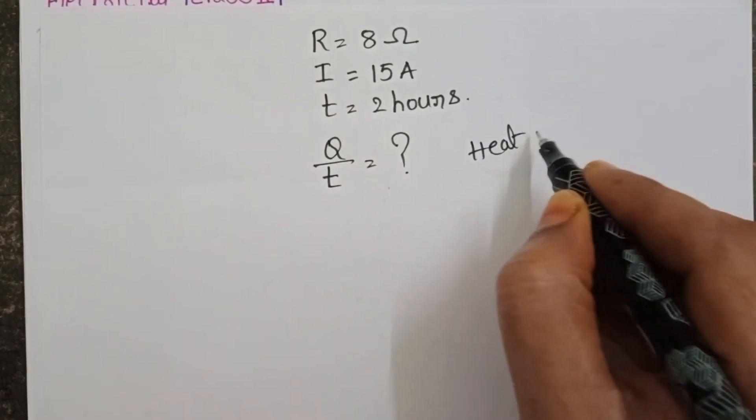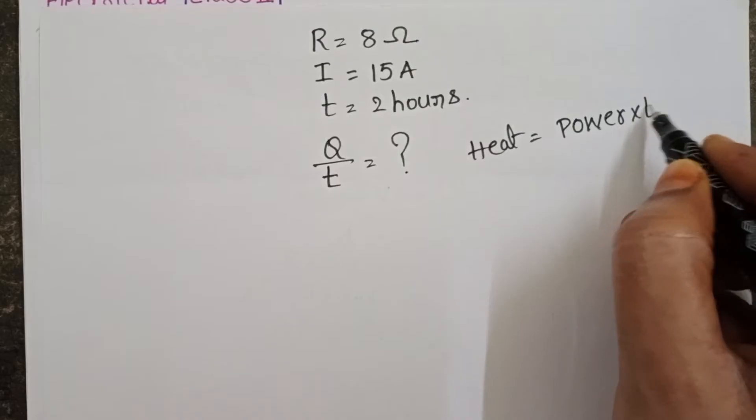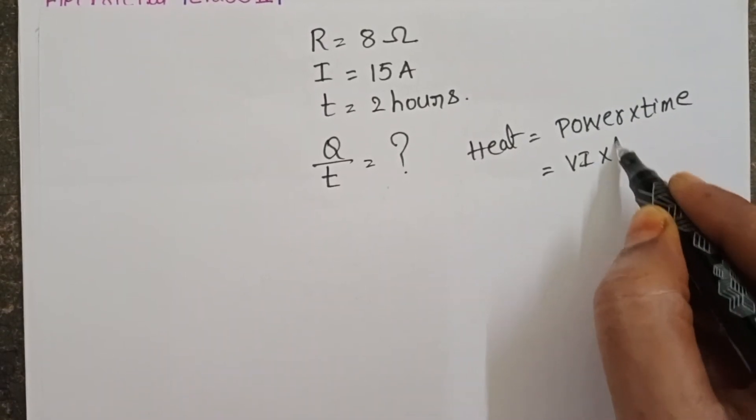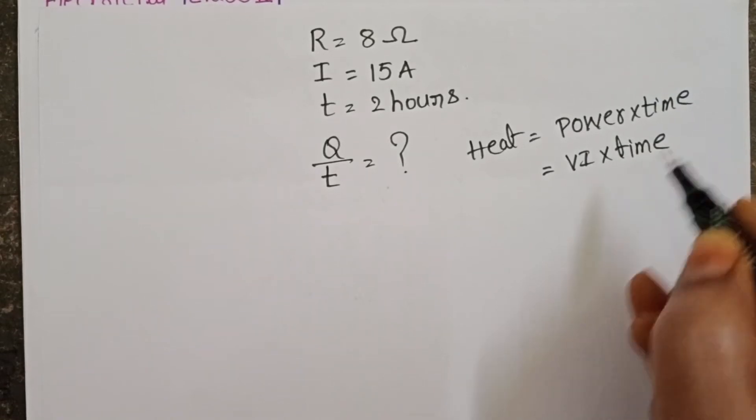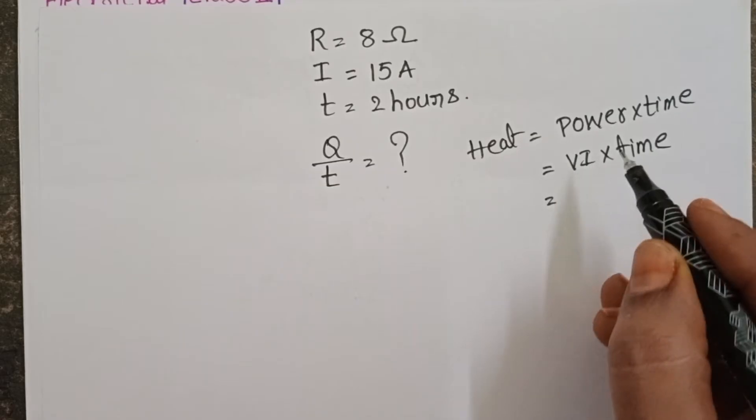Heat is equals to power into time. Power is equals to VI. But here we don't know potential difference. In place of V also take IR.